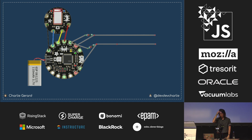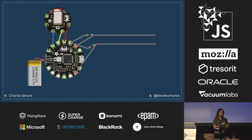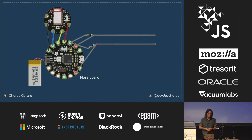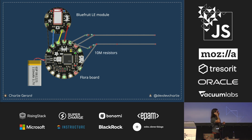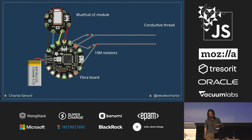I've built this three different times; this is the latest version. At the core is a Flora board, which is good for wearables — the holes around the board are big enough to put a needle through for sewing. I previously used a board not made for wearables and realized too late the thread couldn't go through the holes. I added a Bluetooth module so I don't have to be tethered to my computer, and can communicate to my phone or laptop via Bluetooth. There are also high-value resistors to filter data from capacitive sensing.